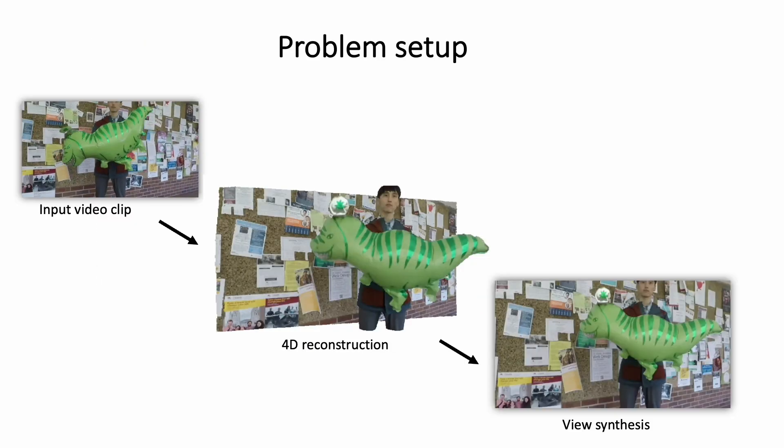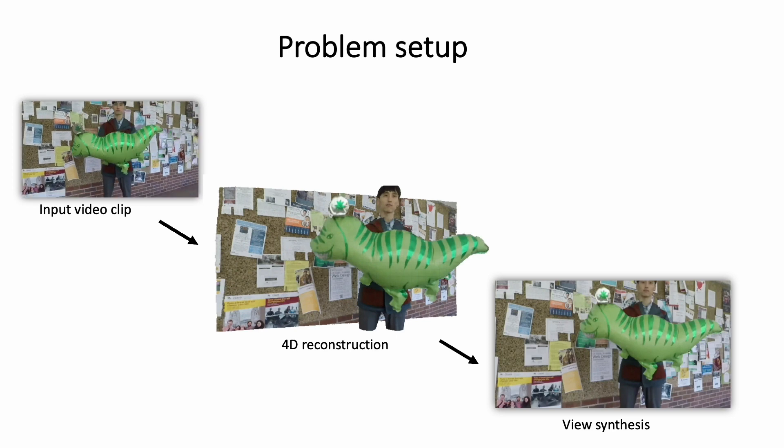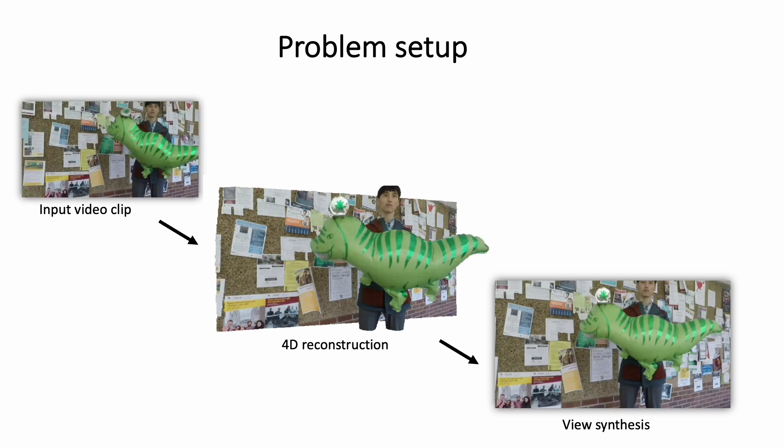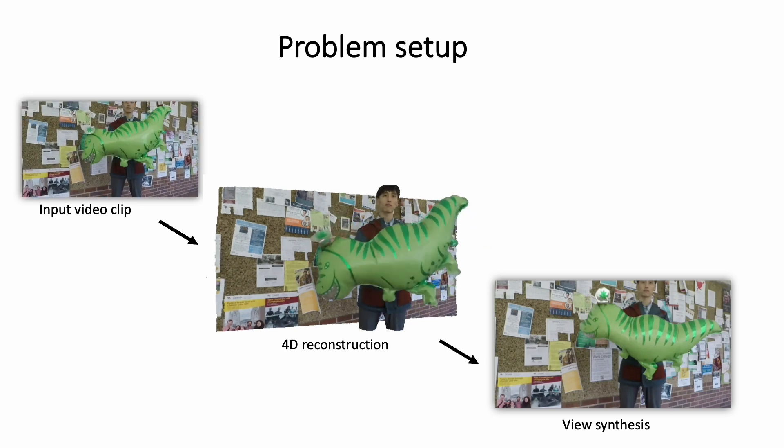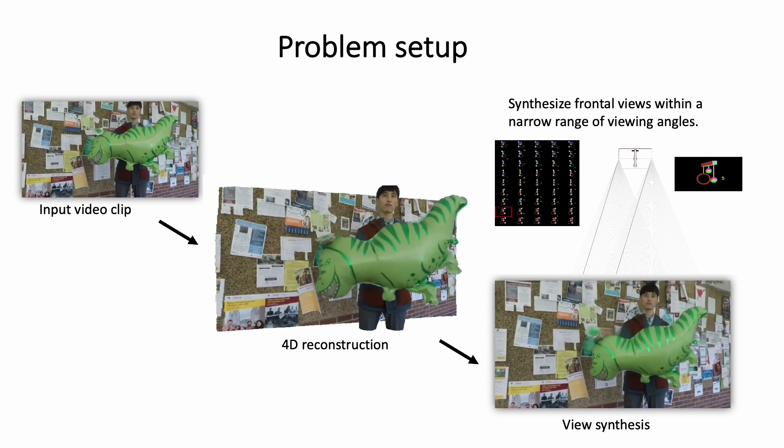In this work, we address the problem of synthesizing novel view images for dynamic scenes from monocular videos. Specifically, we expect the input video clip to contain moving objects, and we want to be able to reconstruct the dynamic scene in 4D so that we can render spacetime novel views for creating image quilts for 3D display.